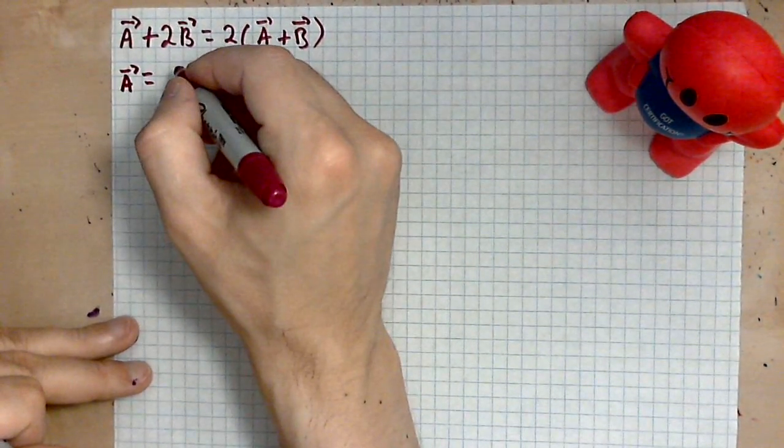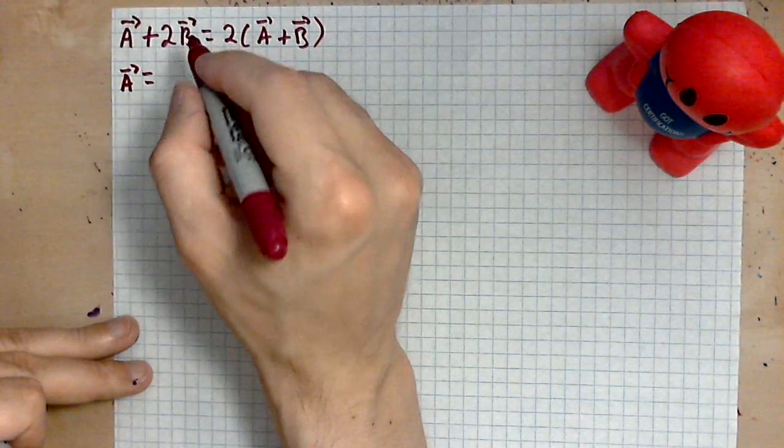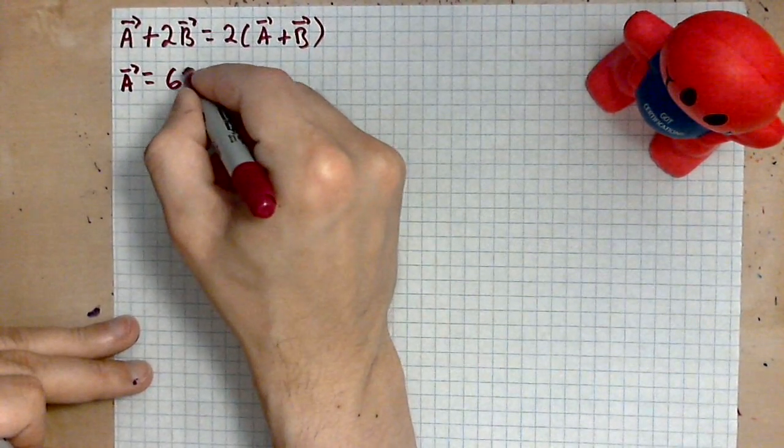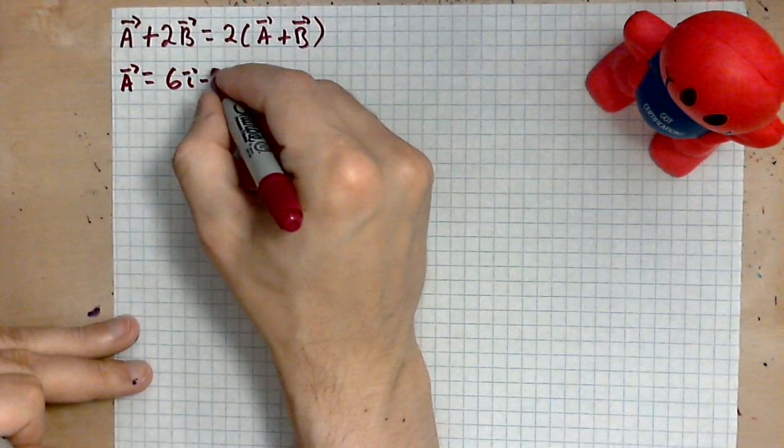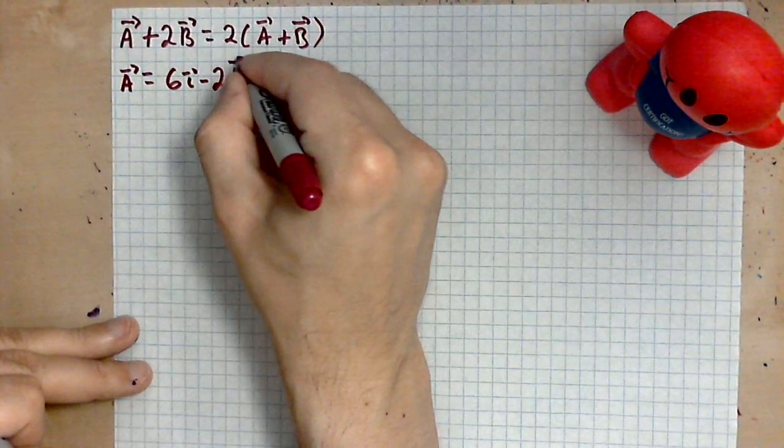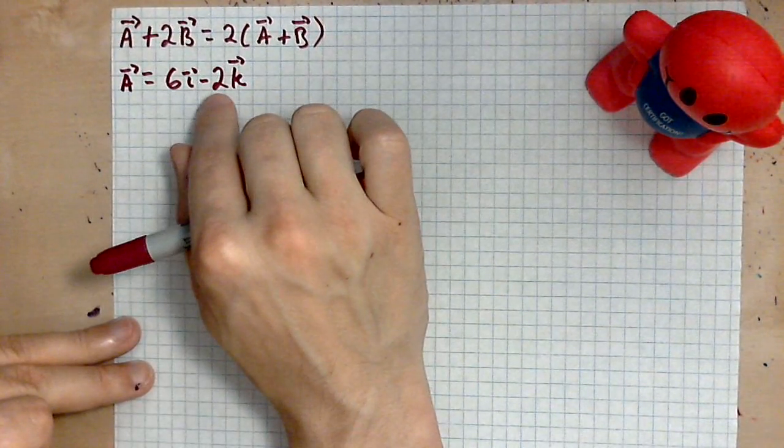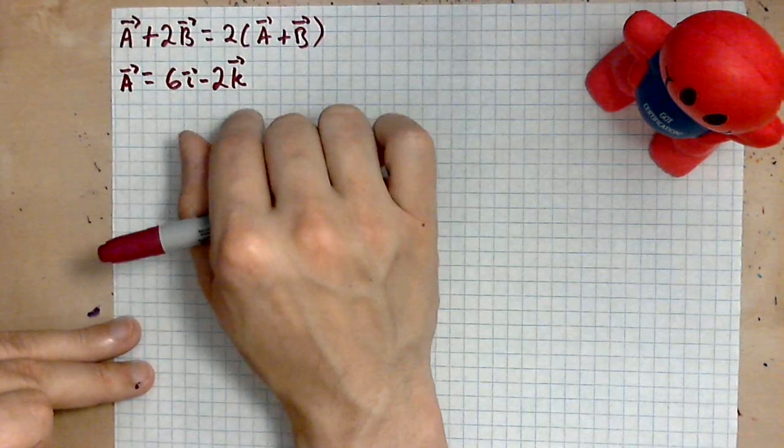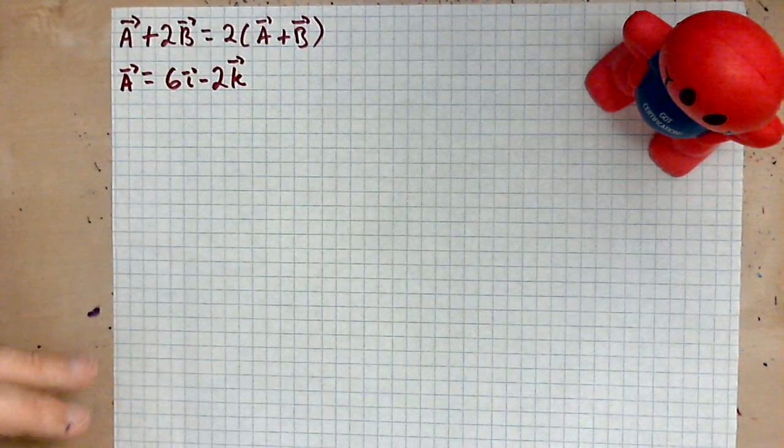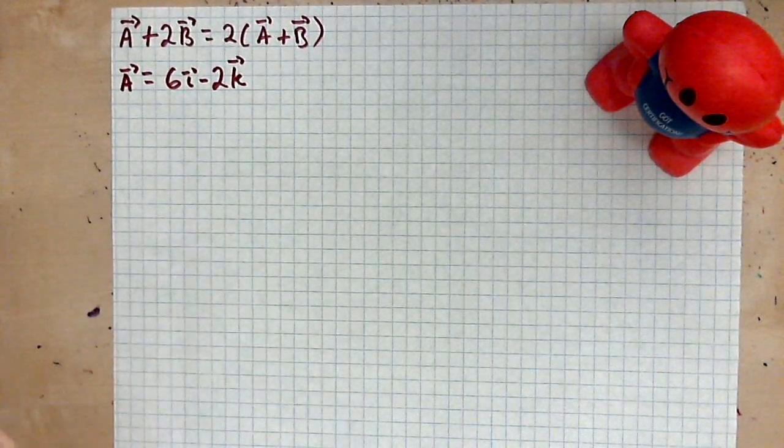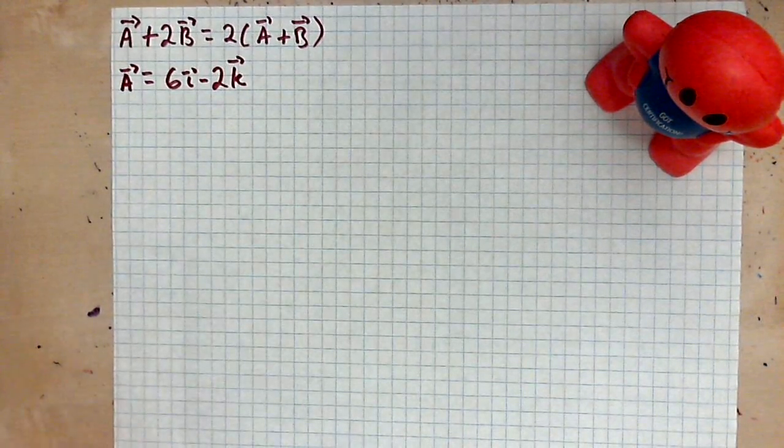And we are defining the vector a to be given by 6i minus 2k, so these are three-dimensional vectors. The j component of vector a is zero. This is the setup, and now the question is we have to find b. B is missing as you can see, we don't know it.